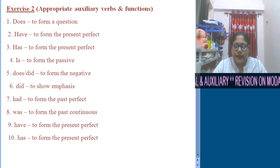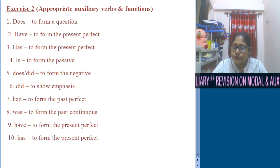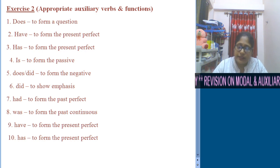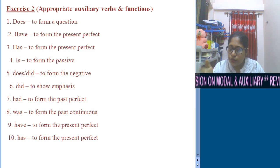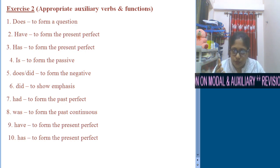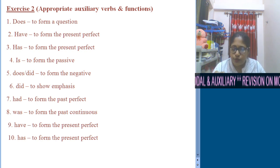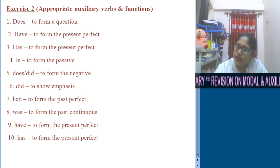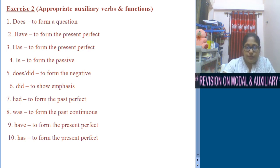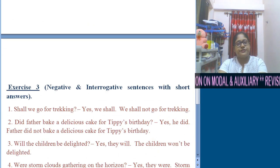Number 9: Dash you decided which company you want to join? Similar to number 2, we use 'have': Have you decided which company you want to join? Again, 'have' is used to form the present perfect. The last one: Dash Tina ever given you piano lessons? The answer is 'has': Has Tina ever given you piano lessons? Again, 'has' is used to form the present perfect tense.